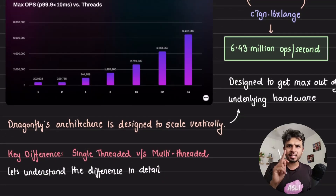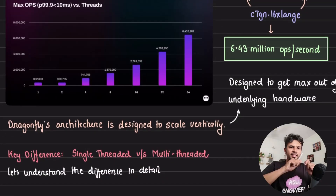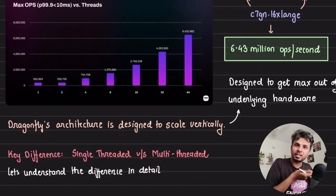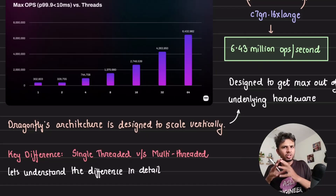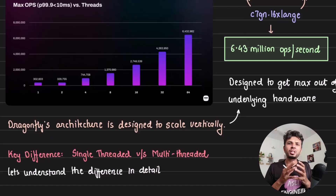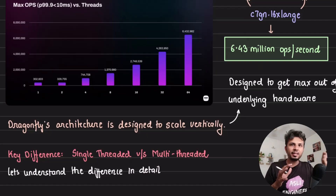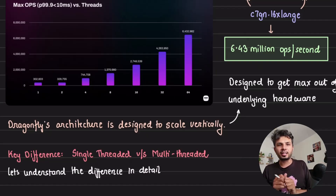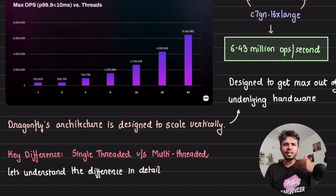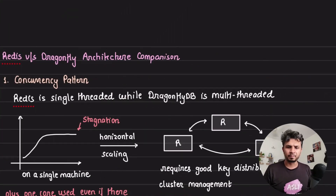The best part of DragonFly DB is that it is designed to get the max out of your underlying hardware — that's what it is optimizing for. Now because it is a drop-in replacement of Redis, the key question is: what's the difference? The key difference between Redis and DragonFly DB is that Redis is single-threaded while DragonFly DB is multi-threaded. Let's understand this in a bit more detail.